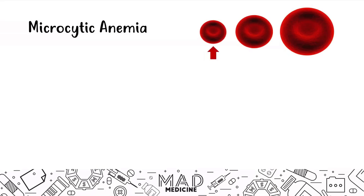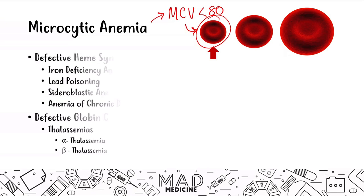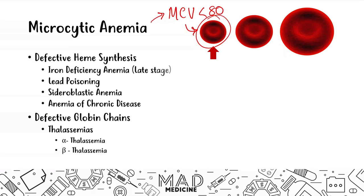Microcytic anemias are a type of anemia where you have an MCV that is going to be less than 80, and it's going to present with a smaller red blood cell than normal. This can be defined based off of defective heme synthesis or defective globin chains.